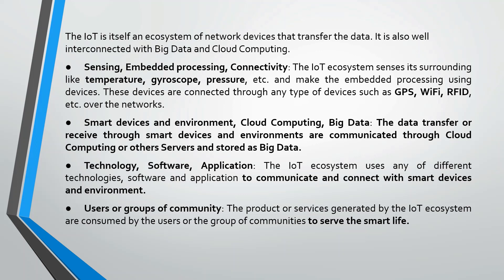The IoT ecosystem is also well connected with big data and cloud computing. Some features of the IoT ecosystem are sensing, embedded processing, and connectivity. As seen in the previous diagram, there are temperature sensors, gyroscopes, and pressure sensors. When we talk about connectivity, GPS, Wi-Fi, and RFID can be used.